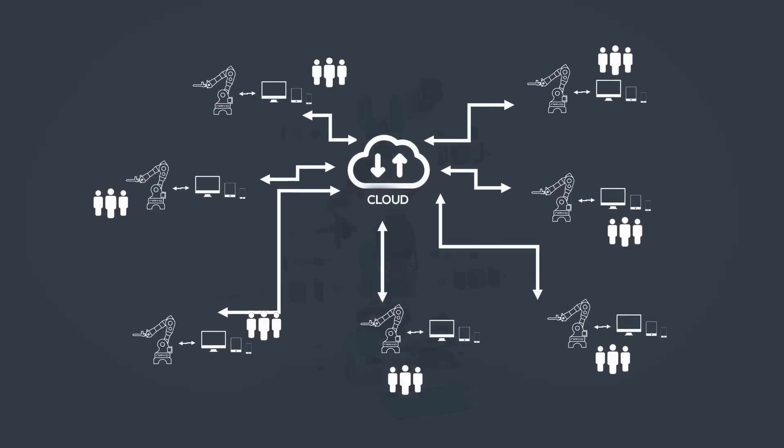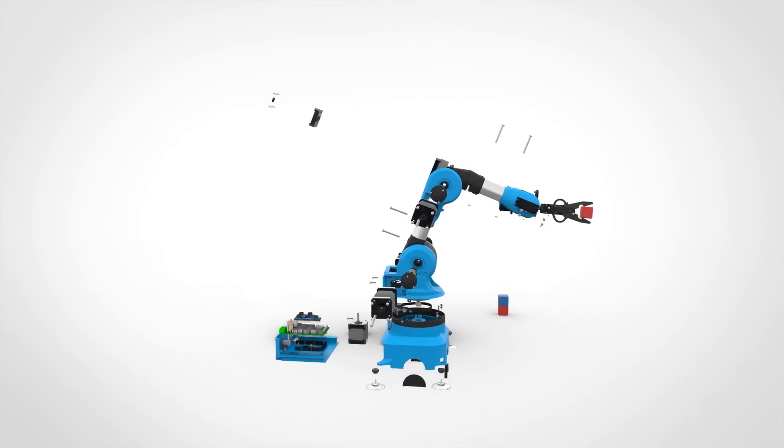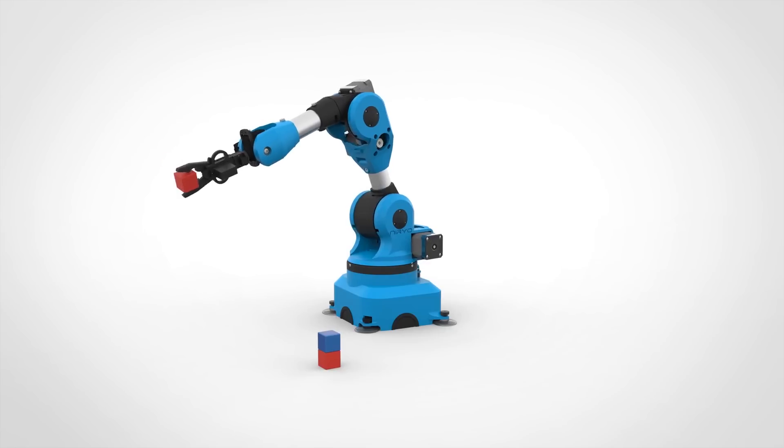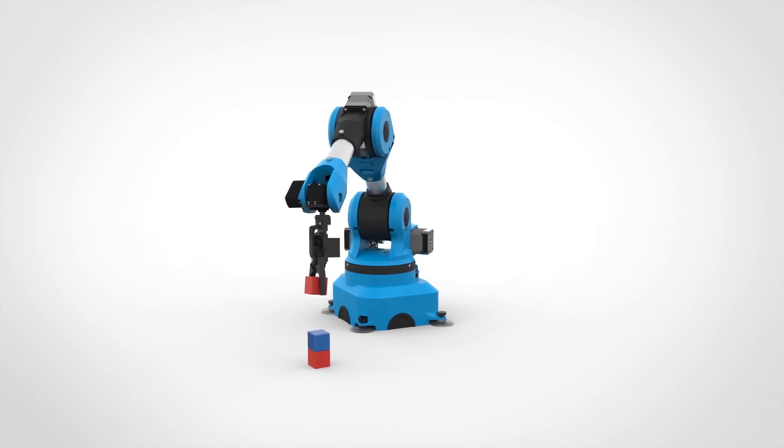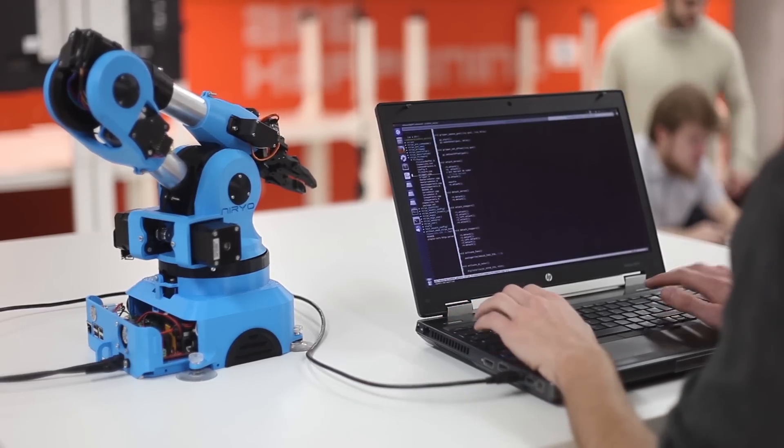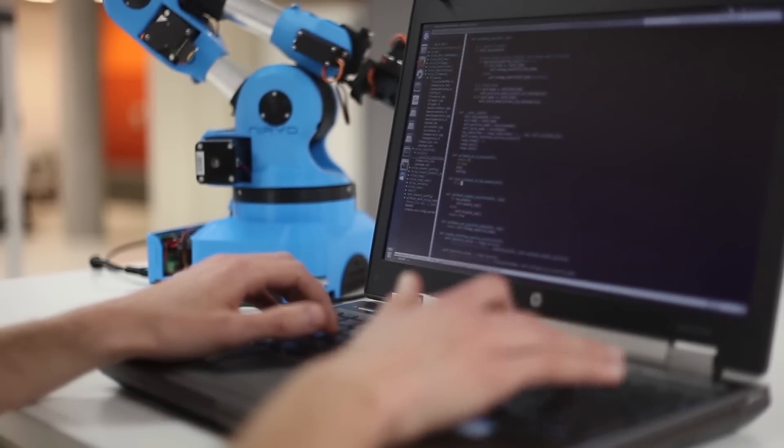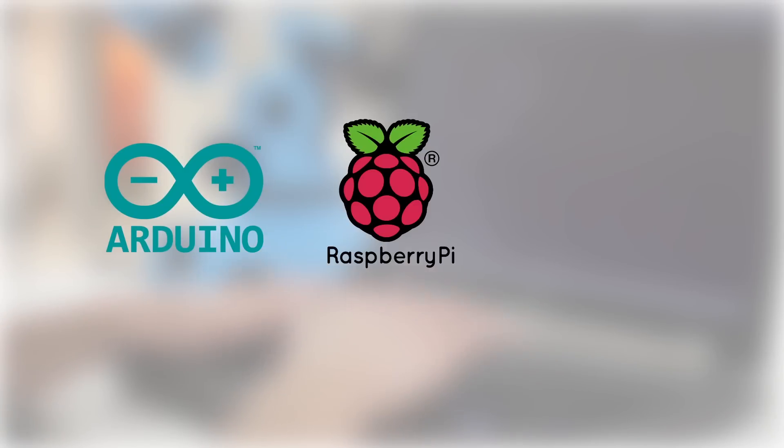We specially thought about makers and developers by making most of our code open source. STL files for 3D printing will also be released. You will be able to program directly on the robot with many APIs and the source code. It's a great way to learn robotics and do useful stuff with Arduino, Raspberry Pi, and robot operating system.